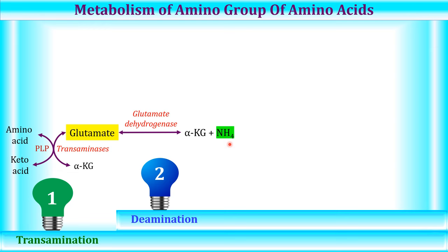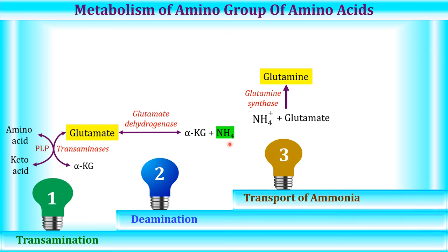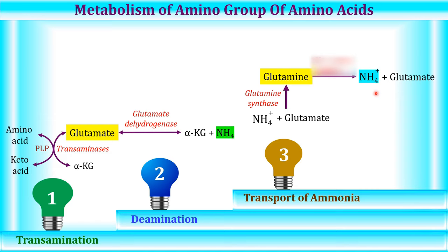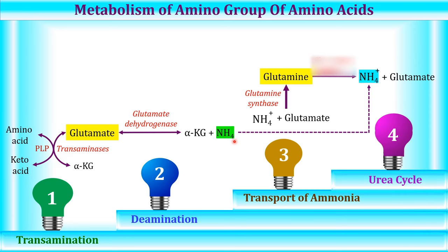Deamination is followed by transport of ammonia in the form of glutamine. The ammonium ion released by deamination combines with glutamate by the action of enzyme glutamine synthase, forming glutamine, and most of the ammonia is transported and stored as glutamine. This glutamine is then acted upon by glutaminase in the liver, releasing ammonium ion. This free ammonium ion is toxic, so it has to be converted into the non-toxic compound urea — and that is done by the urea cycle.